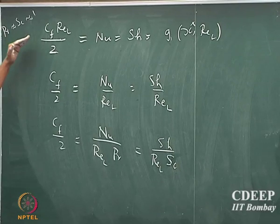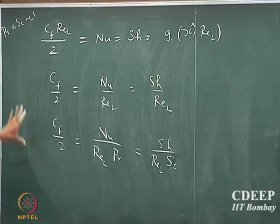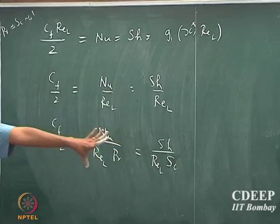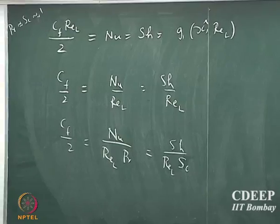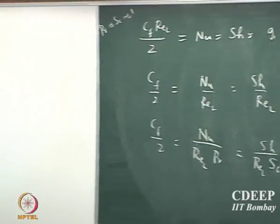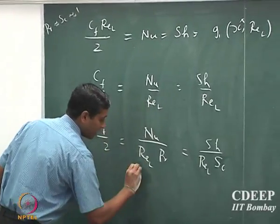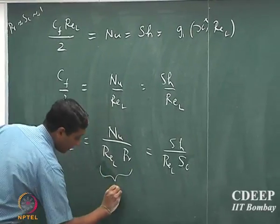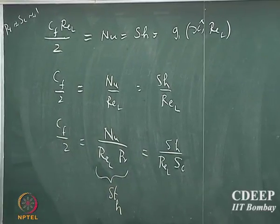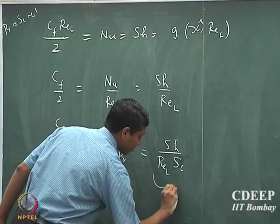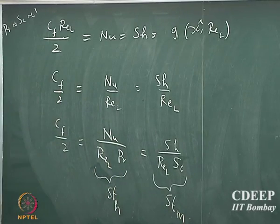So this specific case of Prandtl and Schmidt equal to 1 provides an idea as to what should be the relationship between the different characterizing numbers in these three boundary layers. These three quantities — Cf/2, Nu/ReL, and Sh/ReL — put together define what is called the Stanton number for heat transport, and the other grouping is called the Stanton number for mass transport.